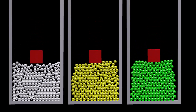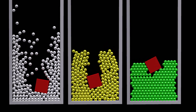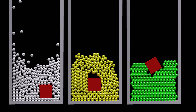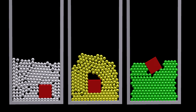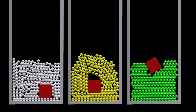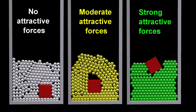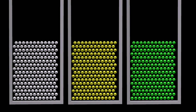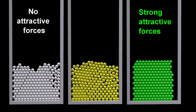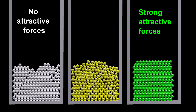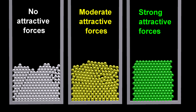Each red rectangle has 20 times the density of the spheres, all of which have the same density as each other. The only difference between the three cases is the attraction that the spheres exert on each other. The white spheres on the left exert no attractive forces on each other. The green spheres on the right exert a strong attractive force on each other. The yellow spheres in the middle exert a moderate attractive force on each other.